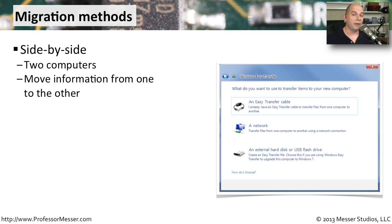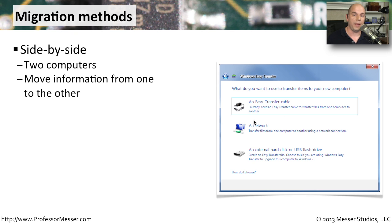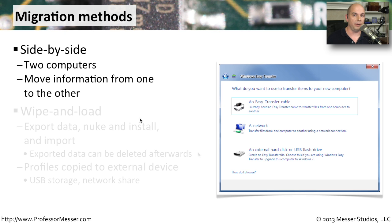If you're migrating from one physical computer to another physical computer, you can do what's called a side-by-side migration. You've got both computers there, turned on at exactly the same time. You can connect them with a specialized transfer cable to send information between the two, and it will simply move information from one computer to another.